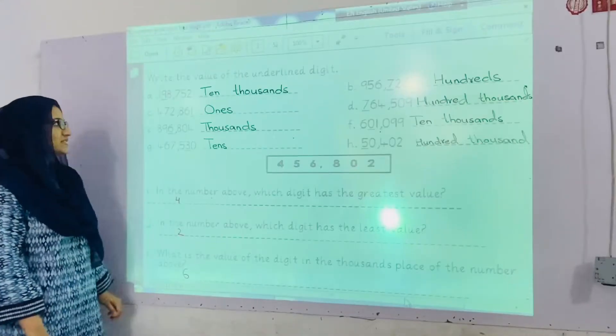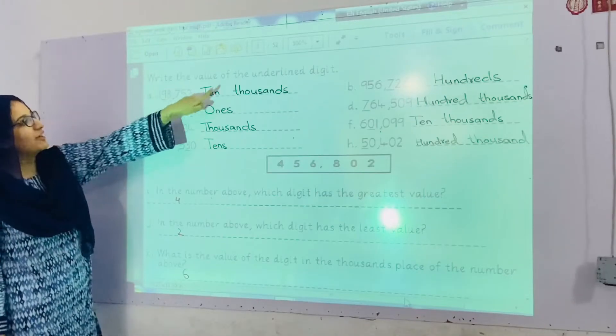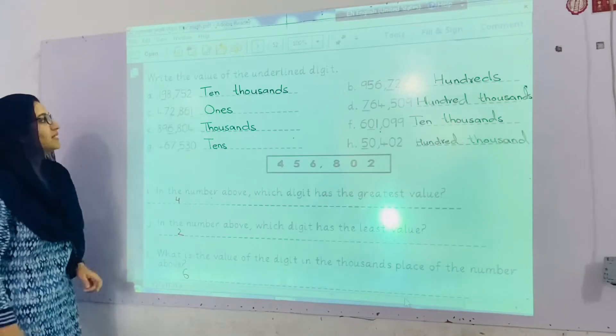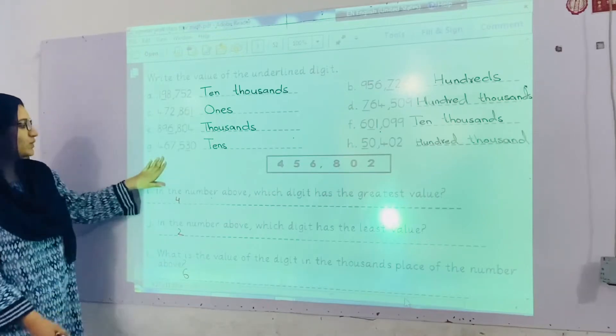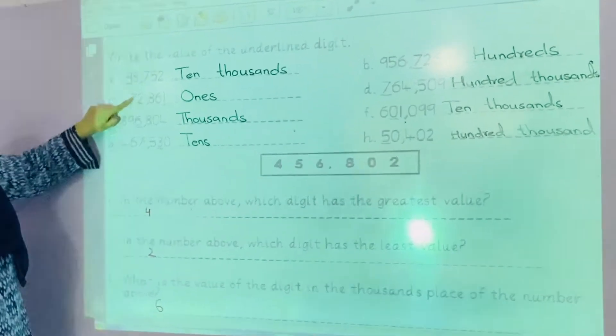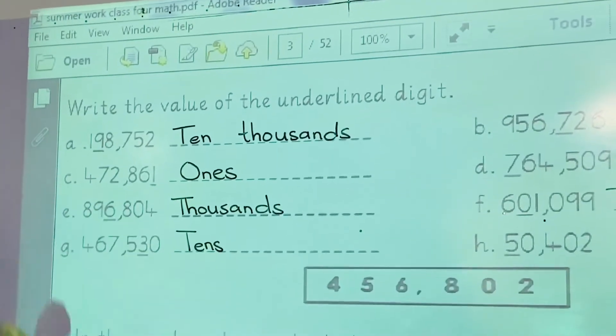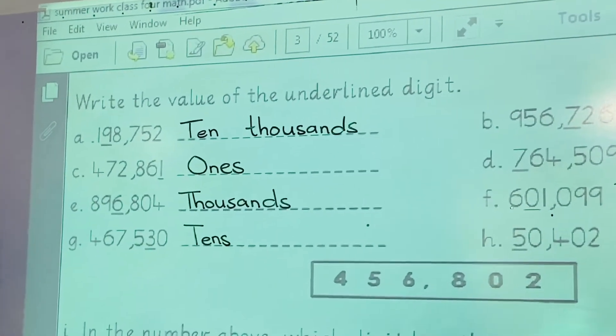Now we will start question number 1: write the value of the underlined digit. You have these values and one digit is underlined. You will write the value of the underlined digit.